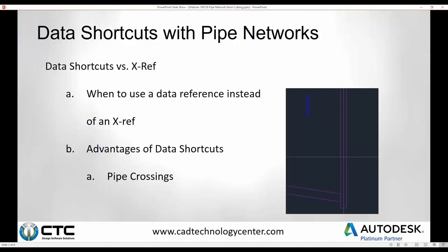What's the key advantage to using a data shortcut, data referencing in pipe networks? Why would you want to do that? Why not simply xref the pipes in the drawings that you want to? One of the biggest advantages for me is pipe crossings — the ability to have your pipe crossings show up in your profile view and to automatically update if that pipe changes elevation. The crossing will be smart enough, if you bring it in as a data reference, to move as long as you're synchronized with the drawing in which that pipe originally exists.